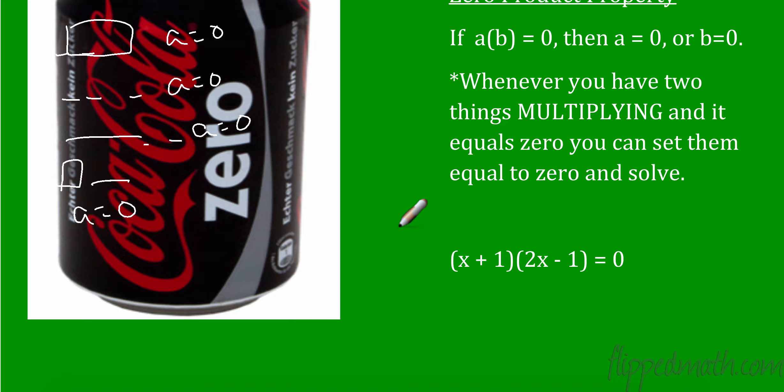So whenever you have two things multiplying, one of them is going to equal 0. So take a look at this. I have two things right here. I have one factor and I have a second factor, and I'm multiplying them. So I can set each of these individual factors equal to 0 to determine what my x is. So here I would subtract 1. 0 minus 1 is negative 1. So x could be negative 1. Or I could add 1 here, 2x would equal 1. Divide by 2, x could equal 1 half.